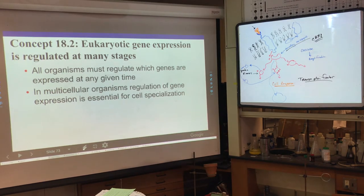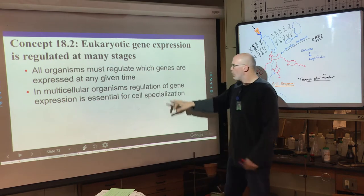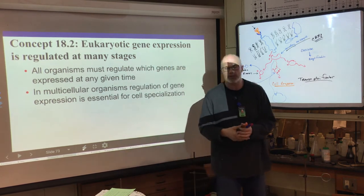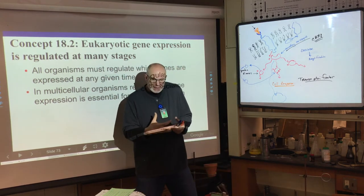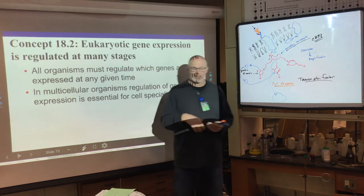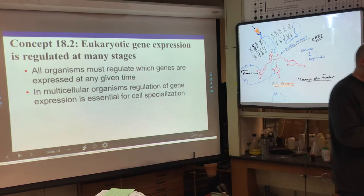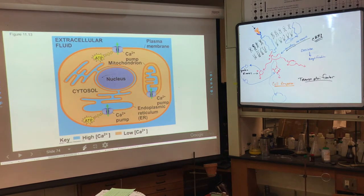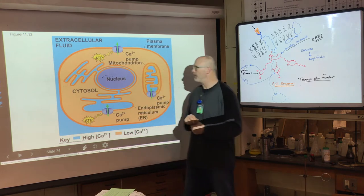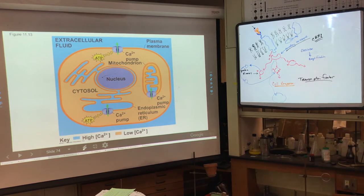All organisms must regulate which genes are expressed at any given time. In multicellular organisms, regulation of gene expression is essential for cell specialization. As cells differentiate from a stem cell — which can become any cell — into a specialized cell like a beta cell in the pancreas, different parts of the genome get turned off. Research to figure out what turns genes off is a big area. Growth factors and chemical signals tell the cell it's time to change.